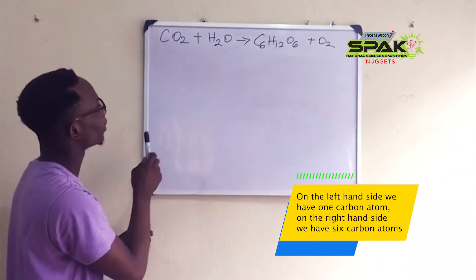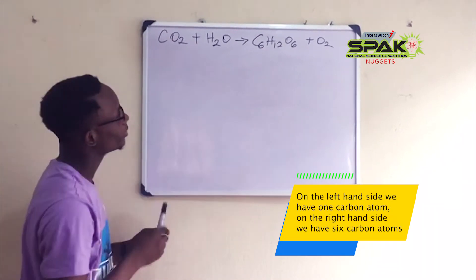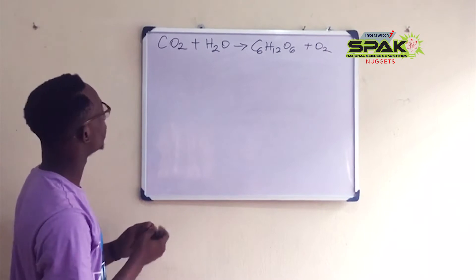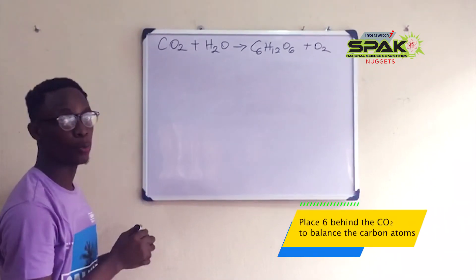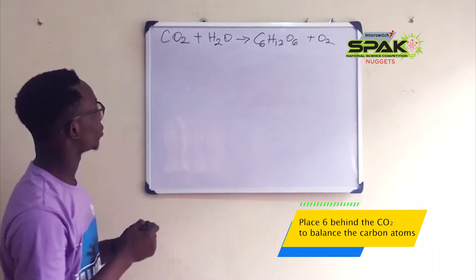On the left hand side we have one carbon atom and on the right hand side we have 6 carbon atoms. So, we place 6 behind the CO2 molecule to balance the carbon atoms.